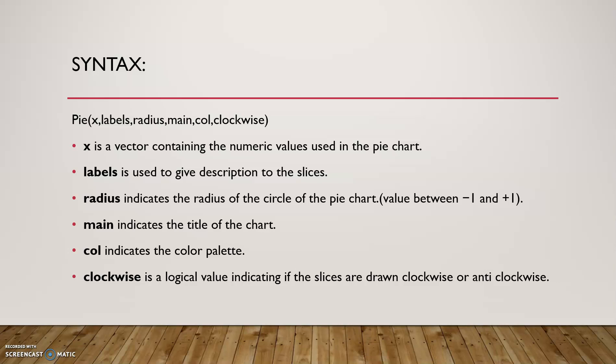x is a vector containing the numeric values used in the pie chart. labels is used to give description to slices. radius indicates the radius of the circle of the pie chart, values between -1 to +1. main indicates the title of the chart. col indicates the color palette. clockwise is a logical value indicating if the slices are drawn clockwise or anticlockwise.